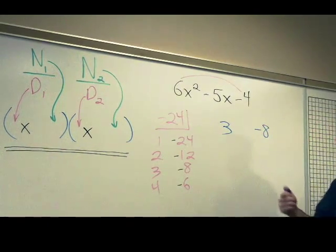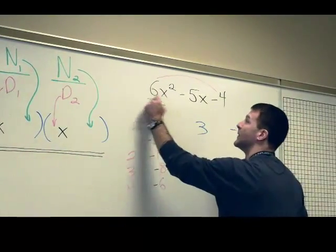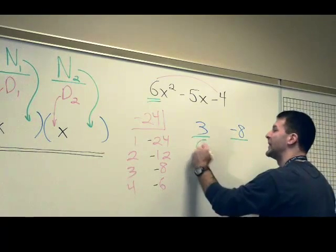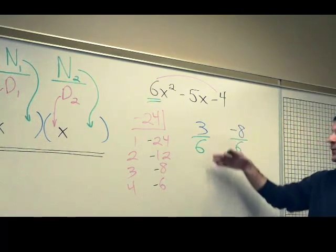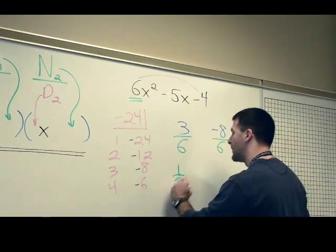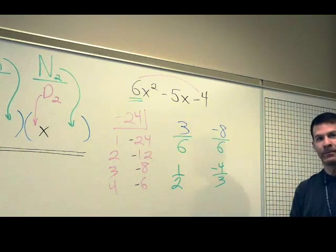From there, we divide by the leading coefficient of 6. Not real division, just as a fraction. We reduce the fractions if we can. That would be a 1 half here, and negative 4 thirds here.